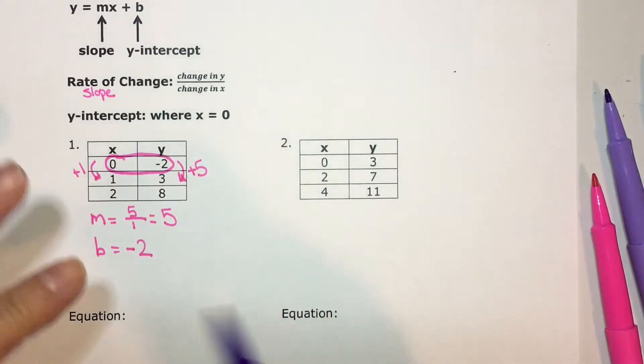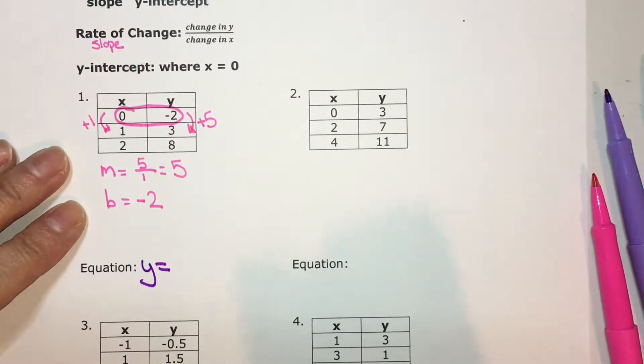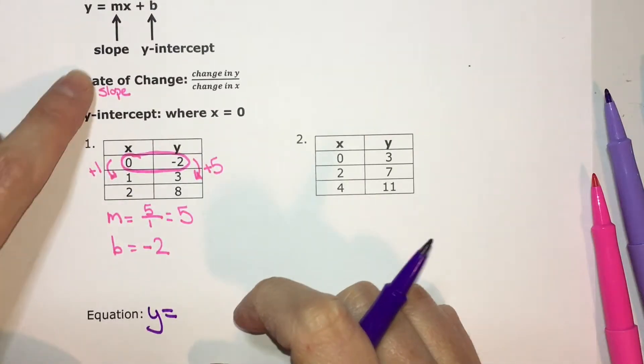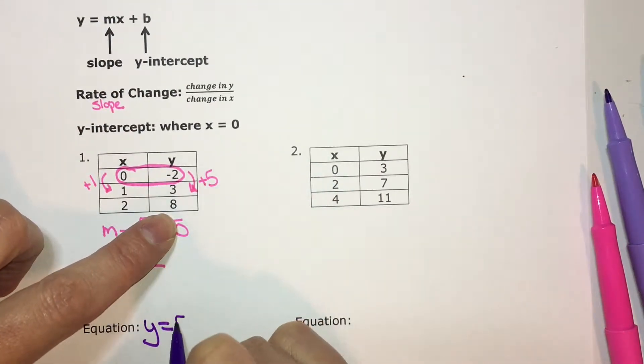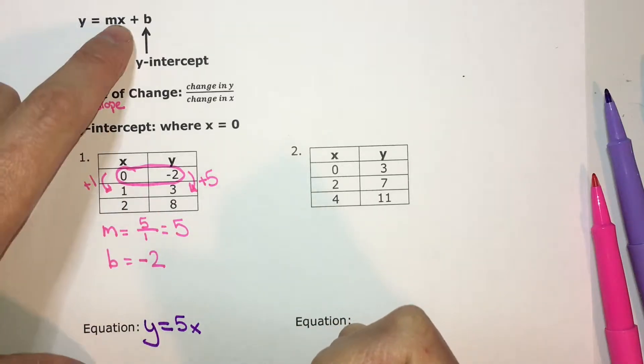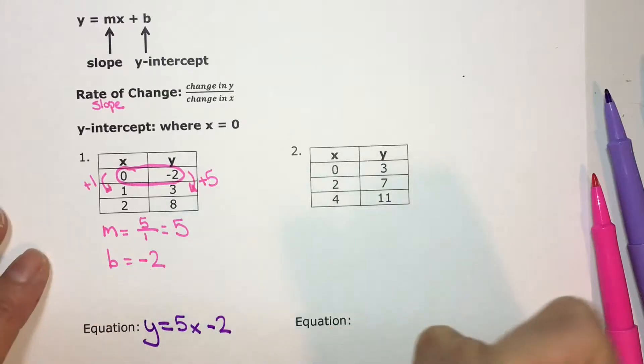This equation, this one's pretty easy to set up. It's y equals the slope times x. So 5 times x, or 5x, plus b. Since b is negative, we can just write minus 2.